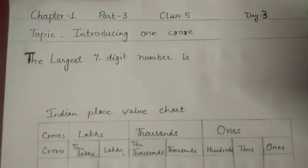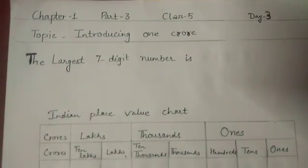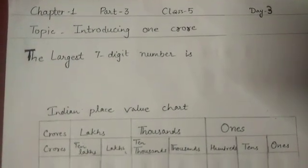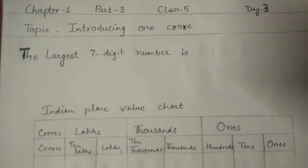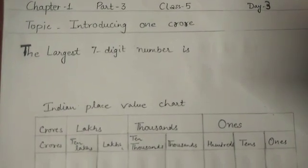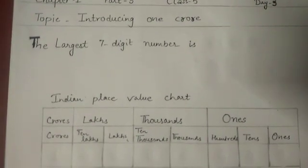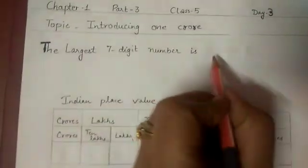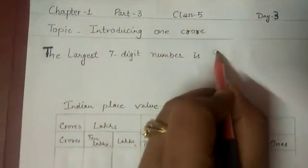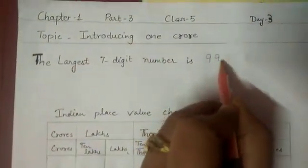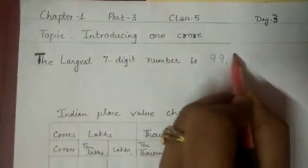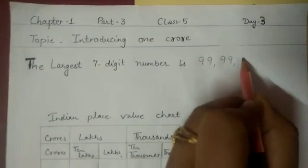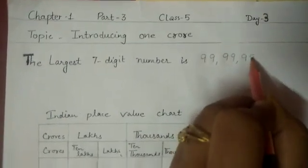Hello friends. In my previous lecture I discussed about the numbers up to 7 digits, and we know that the largest 7-digit number is 99,99,999.